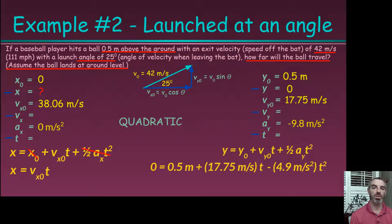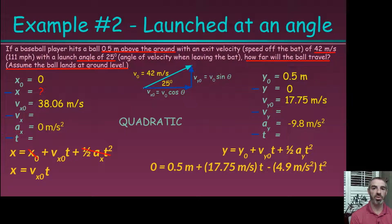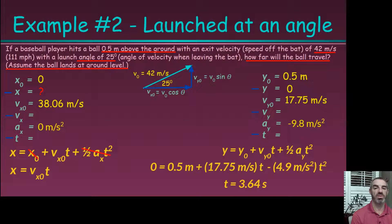The quadratic isn't easily factorable with decimals, so you can either use the quadratic formula or graph it in your calculator and find the zeros of the function — where it crosses the x-axis. I prefer the graphing method; I'll have a video posted on how to do that. Using that approach, I solve for a time of 3.64 seconds.